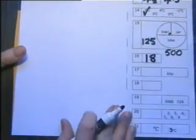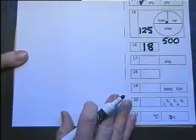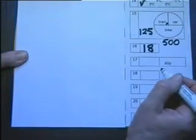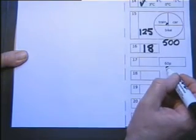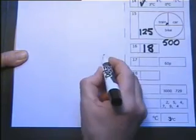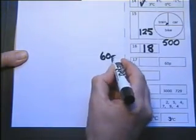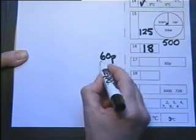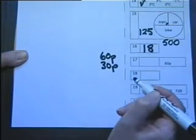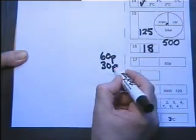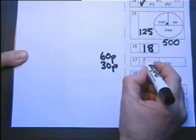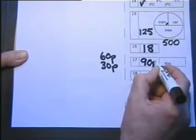Number 17: 2 pens cost 60 pence. So if 2 pens cost 60 pence, 1 pen would cost 30 pence. The question asks how much 3 pens cost, so we've got 3 times 30 pence which is 90 pence.